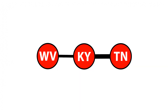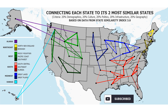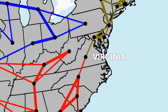By linking each state to its two most similar counterparts, a unique picture of the United States emerges. This map of America shows that some states connect to states that are out of their region. According to the analysis, Virginia has characteristics of both the Northeast region and the South.